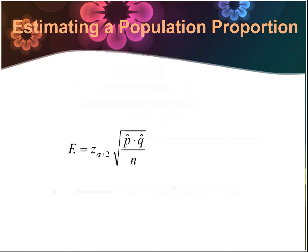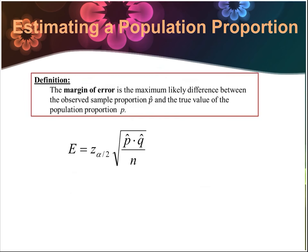When we construct confidence intervals, we need to talk about margin of error. The formula for margin of error is z sub alpha over 2 times the square root of p-hat times q-hat over n. Like in binomial distribution problems, p and q are complements of each other. P-hat is the sample proportion and q-hat is its complement. The margin of error is the maximum likely difference between the observed sample proportion p-hat and the true value of the population proportion p.